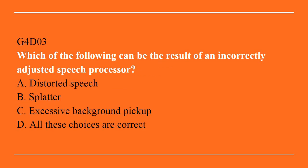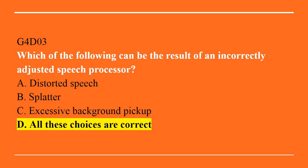G4D03: Which of the following can be the result of an incorrectly adjusted speech processor? A. Distorted speech. B. Splatter. C. Excessive background pickup. Or D. All of these choices are correct. The correct answer is D. All of these choices are correct.